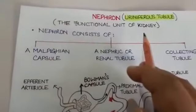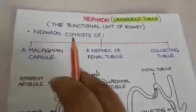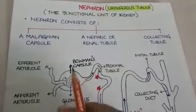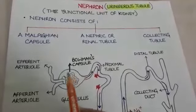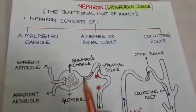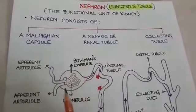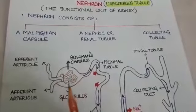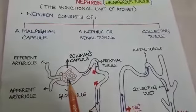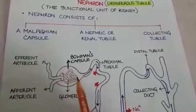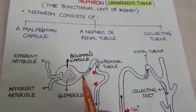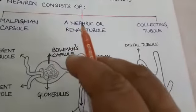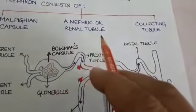the functional unit of the kidney. A nephron consists of three parts. The first is the Malpighian capsule. A Malpighian capsule has a Bowman's capsule, which is a cup-shaped structure whose cavity is filled with a tuft of blood capillaries called the glomerulus. The Malpighian capsule continues with a long tube called the nephric tubule or the renal tubule.